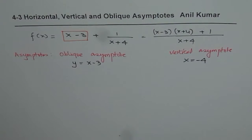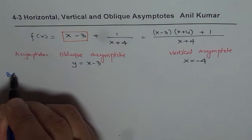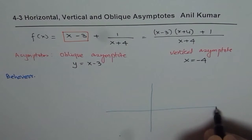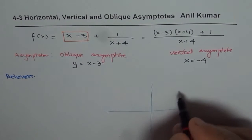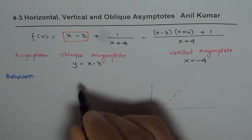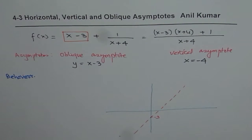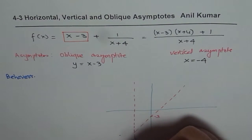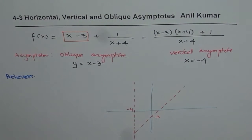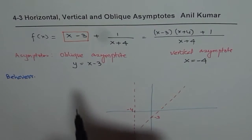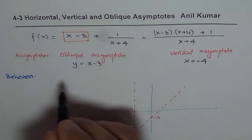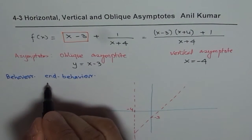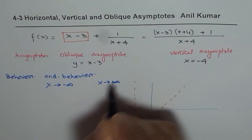Now let us analyze the behavior near the asymptotes. Let me sketch here and then we will discuss the behavior. We have x minus 3 as the oblique asymptote, so that represents a straight line with y-intercept minus 3. The vertical asymptote is at minus 4. When we say behavior near the asymptote, as far as the oblique asymptote is concerned, we will analyze the end behavior — that is, what happens to the graph as x approaches minus infinity or as x approaches plus infinity.